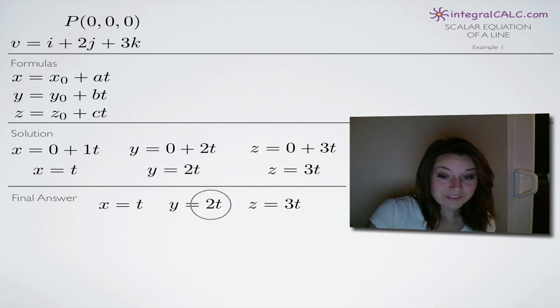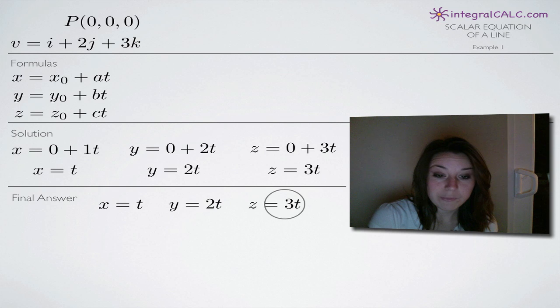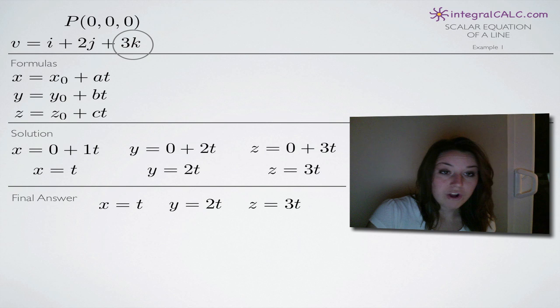We'll get y equals two t and z equals three t. And that's it. So we put them all together and together, these three things comprise the scalar equations of this particular line. So really simple again, especially when you have this point P and a vector already in this form with these coefficients laid out for you. I hope that helped and I'll see you in the next video. Bye!